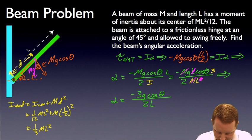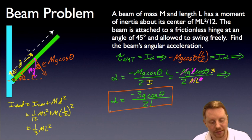so I'm left with minus 3g cos theta all over 2L. That's going to be our angular acceleration for our beam as it swings down. So application of Newton's second law for rotation, along with taking a look at the parallel axis theorem to find the moment of inertia about a point other than the center of mass.